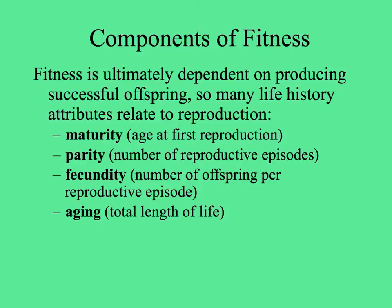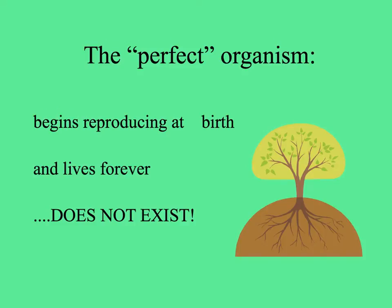Maturity, parity, fecundity, and aging are all components of fitness. Like any organism, the perfect plant would be one that could begin reproducing at birth and reproduce forever because it would live forever. But there are no plants like this. While a single genotype may perpetuate through vegetative reproduction, an individual normally does not live forever reproducing sexually forever.